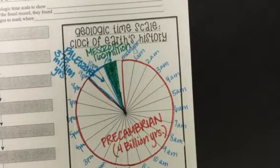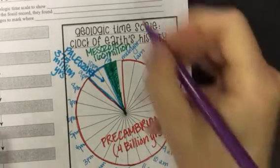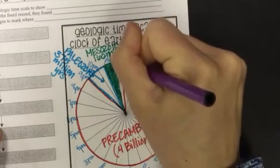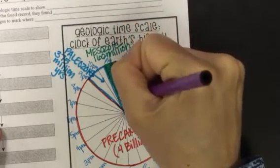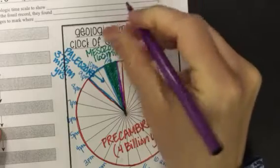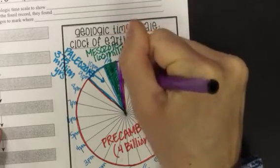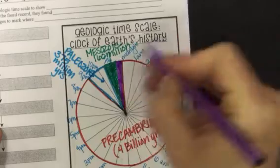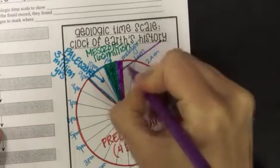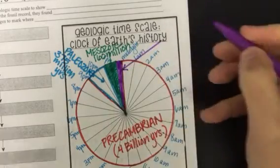And then the last chunk is the Cenozoic, the era that we live in now. And this has lasted about 65, 66 million years. And I'm going to put my arrow over here where I have a little bit more room.